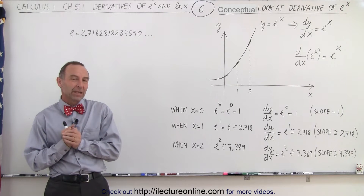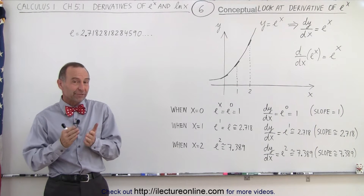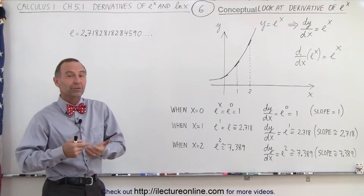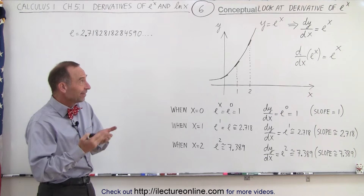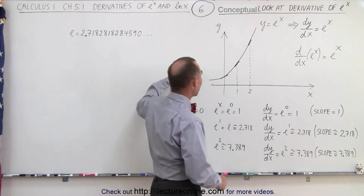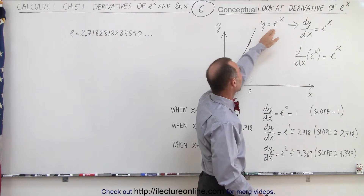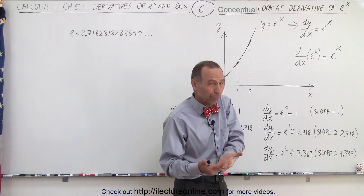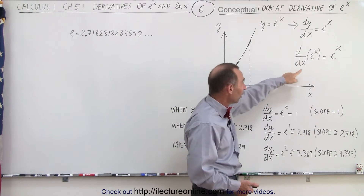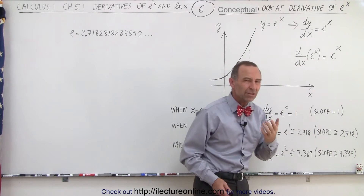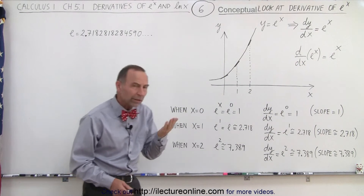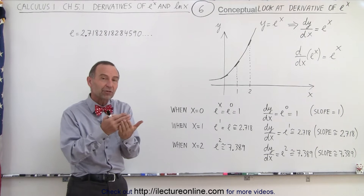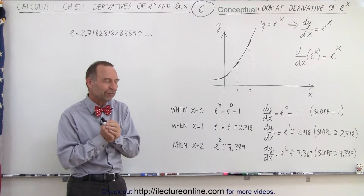Welcome to our lecture online. It turns out the derivative of the function y equals e to the x is very simple. The derivative of e to the x is e to the x. So here we have the exponential function y equals e to the x, and the derivative of that is equal to e to the x. Another way of writing that is: d/dx of e to the x is e to the x. This is the only function in all of mathematics where the derivative of a function is equal to the function itself.